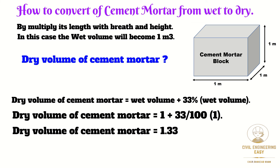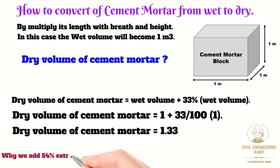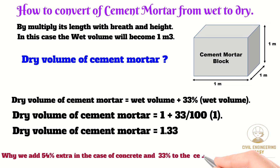That was all about the dry volume calculation of concrete and cement mortar. In the next part of this video, I will explain why we add 54% extra in the case of concrete and 33% for cement mortar, and how these factors have been derived. Thanks for watching — see you in the next video.